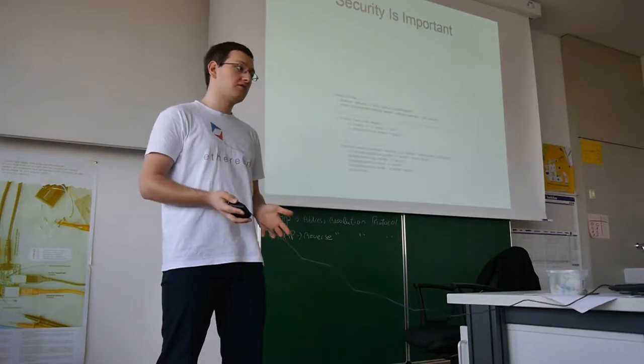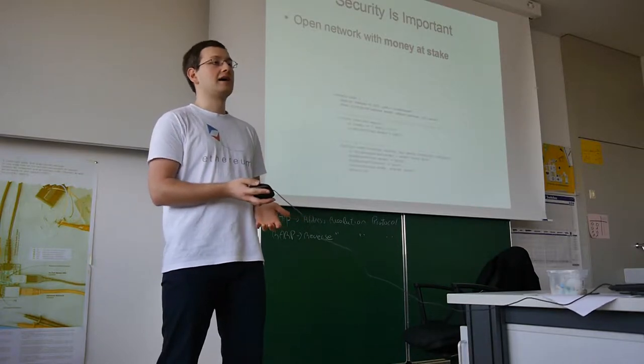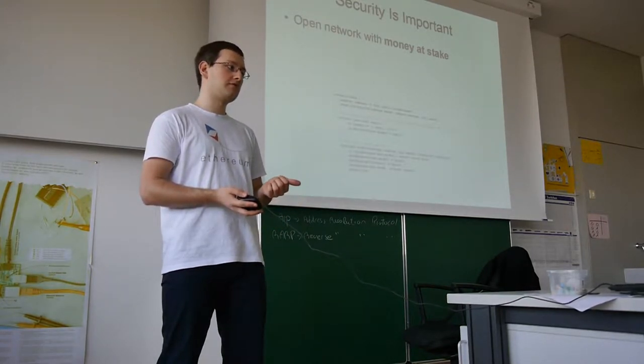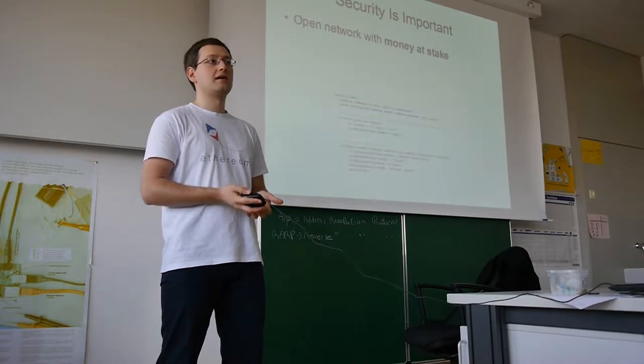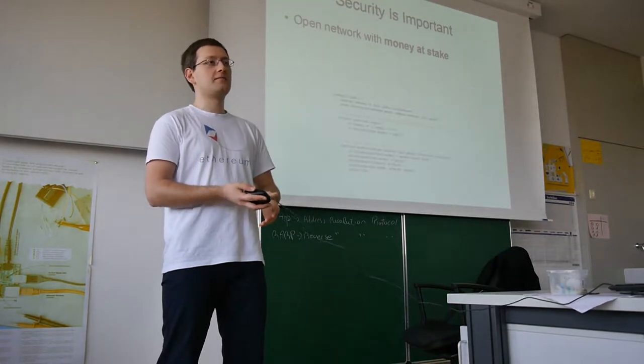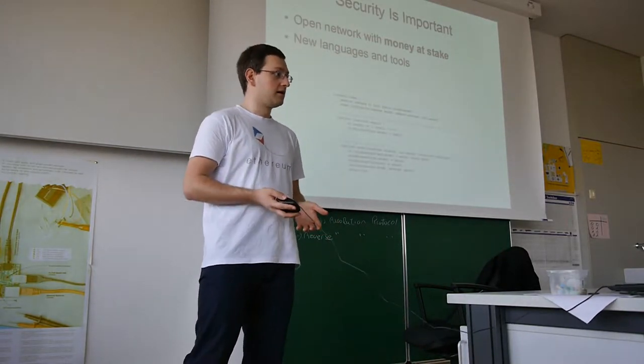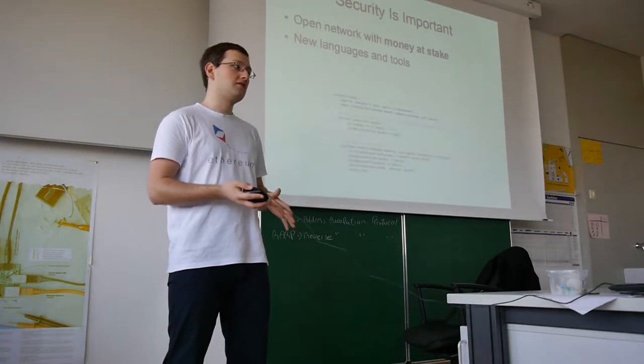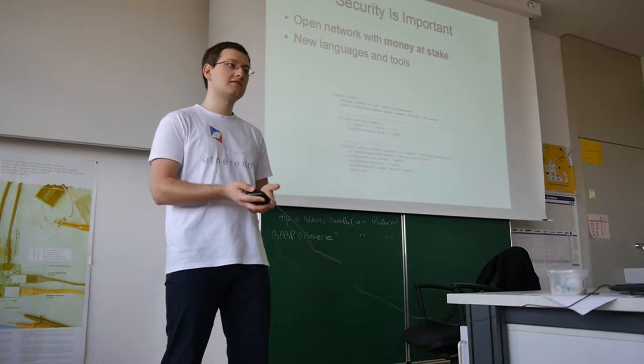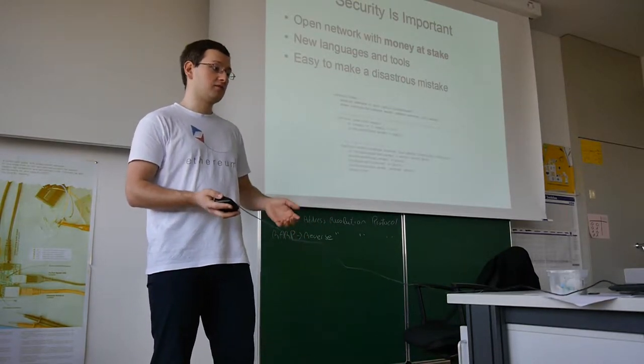What is interesting from the computer science point of view here is that security is very important. So basically these networks are open, so everyone can participate, and every mistake, every bug in the code of these systems can cause the loss of money. And it happened multiple times when badly programmed applications, which are called smart contracts, which run on these networks, they had bugs in them, and that caused the owners of the contracts to lose tens of millions of dollars. The programming environment is not yet developed, so now people are developing new languages, new tools, new techniques to help programmers write these programs in a more secure way. And yes, it's very easy to make a mistake that will lead to very bad consequences.